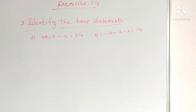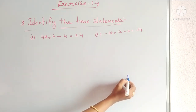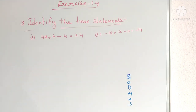Third problem set: Identify the true statements. Some statements are given and each time we have to tell whether it is true or false. We calculate by following BODMAS rule; if LHS equals RHS then it is true, otherwise it is false.